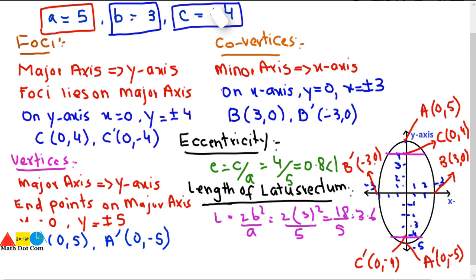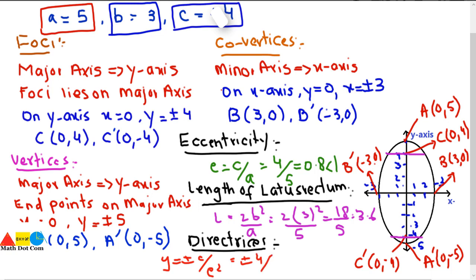For the directrices: since the major axis is the y-axis, the directrices lie parallel to the x-axis. The formula is y = ±a²/c, equivalently y = ±c/e². Substituting: y = ±4/(0.8)² = ±6.25. So the directrices are at y = +6.25 and y = −6.25, lying outside the ellipse on the positive and negative y-axis.